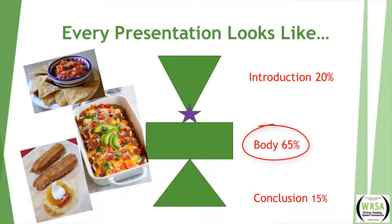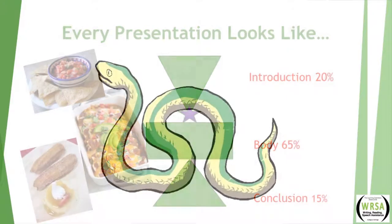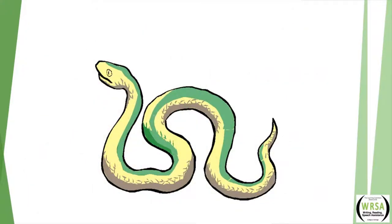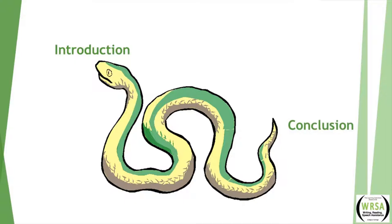Starting with the main meal can often lead to really great ideas for appetizers and desserts. Similarly, starting with the body can often lead to creative ways to gather one's attention and conclude when presenting. So often we have been taught to do a presentation in a linear format — we think of the introduction and write it, then write our main points, transitions, details, and citations, and finally wrap it up and conclude. This can be a recipe for disaster and often leads to struggles when trying to be creative in an attention getter and a clincher.